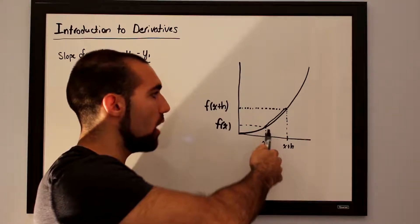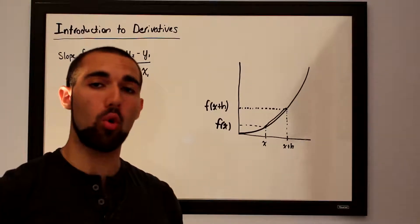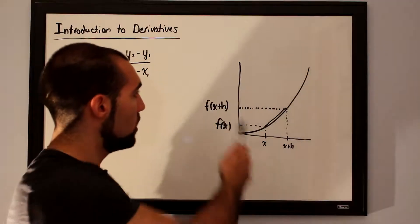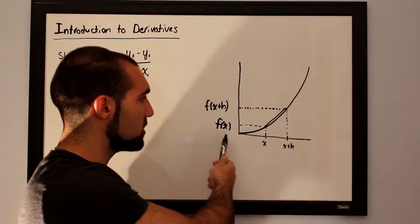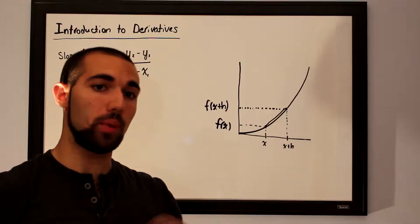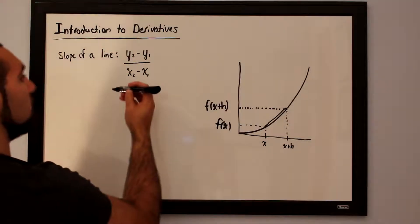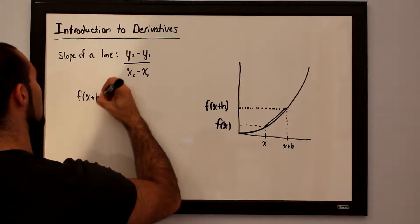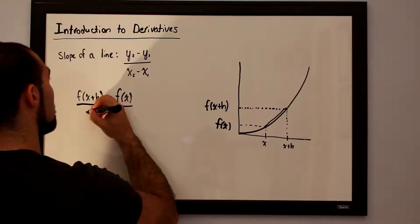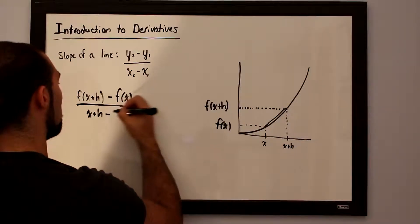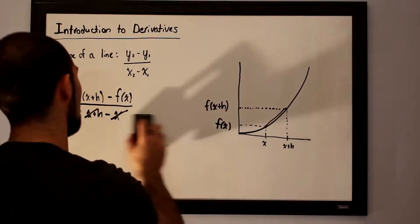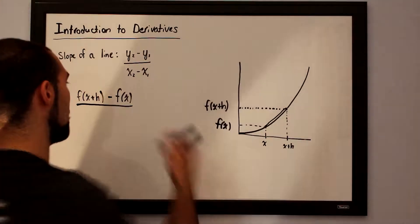If I took this point as my y2 and this as my y1, I would have an approximation of the slope, but a pretty poor one. Substituting pieces of this graph into our slope formula, we would have y2 as f of x plus h, y1 as f of x, x2 as x plus h, and x1 as x. That gives us f of x plus h minus f of x over x plus h minus x. Notice the x's cancel in the denominator, leaving f of x plus h minus f of x over h.